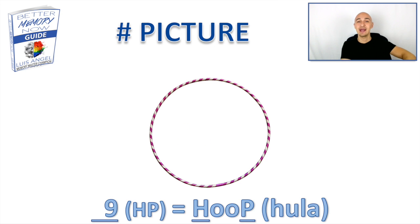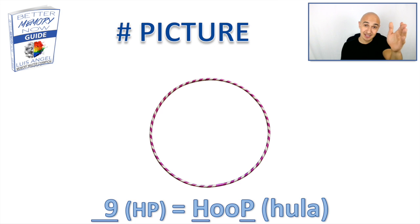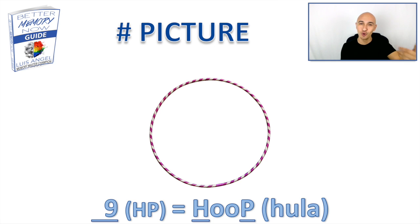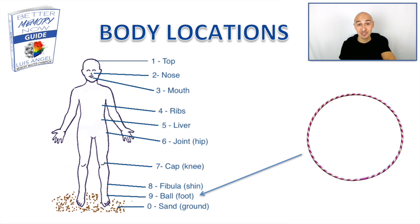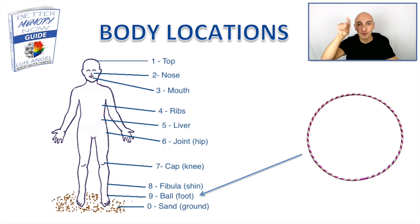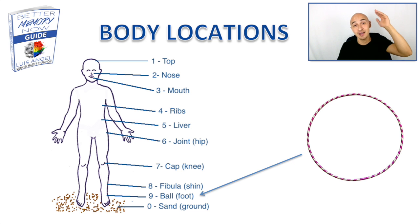Number nine — picture a hula hoop, a hoop for number nine. The nine has a B or P sound, and throwing in some vowels after the H gives you hoop. Associate that to the ball of your foot. Maybe you're spinning the hula hoop round and round on the ball of your foot.